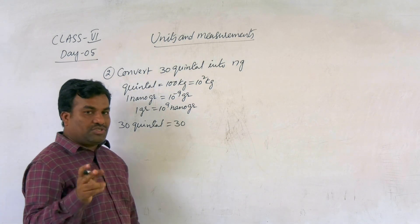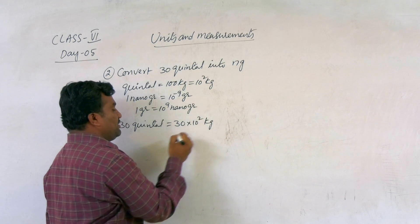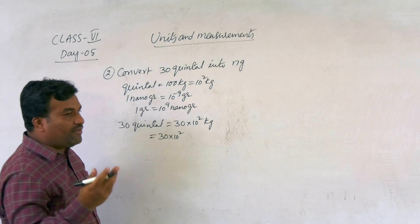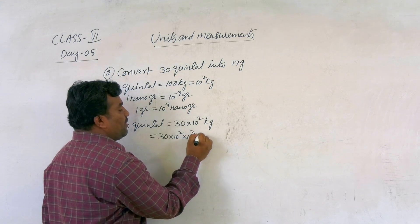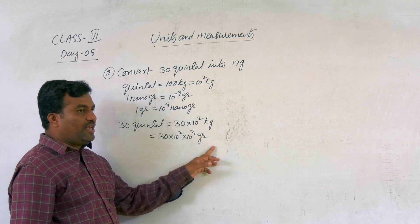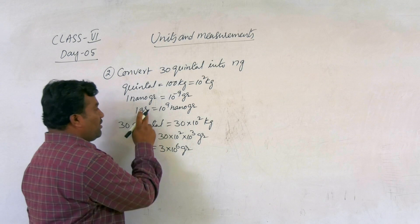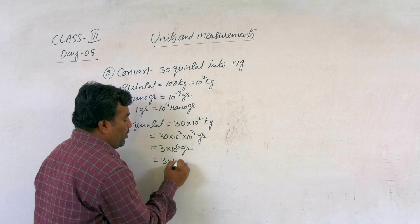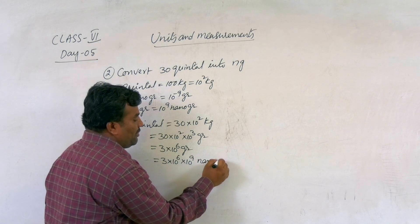Now, 30 quintal — first convert quintal to the SI unit kg: 1 quintal equals 10 to the power of 2 kg, so 30 quintal equals 30 into 10 to the power of 2 kg. Then convert kg to grams: 1 kg equals 10 to the power of 3 grams, giving 30 into 10 to the power of 5 grams. But 1 gram equals 10 to the power of 9 nanograms, so we have 3 into 10 to the power of 6 into 10 to the power of 9 nanograms.